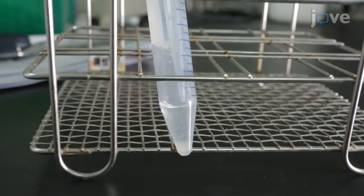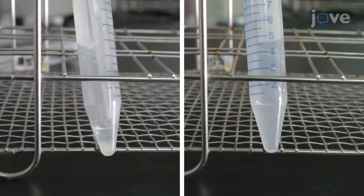After centrifuging the worms, remove the supernatant and keep the worms in 3.5 mL of deionized water.